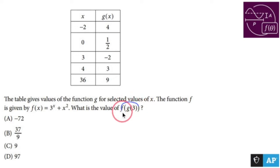g of 3, this guy right there, means I could just take 3, plug that in, so g of 3 is negative 2.